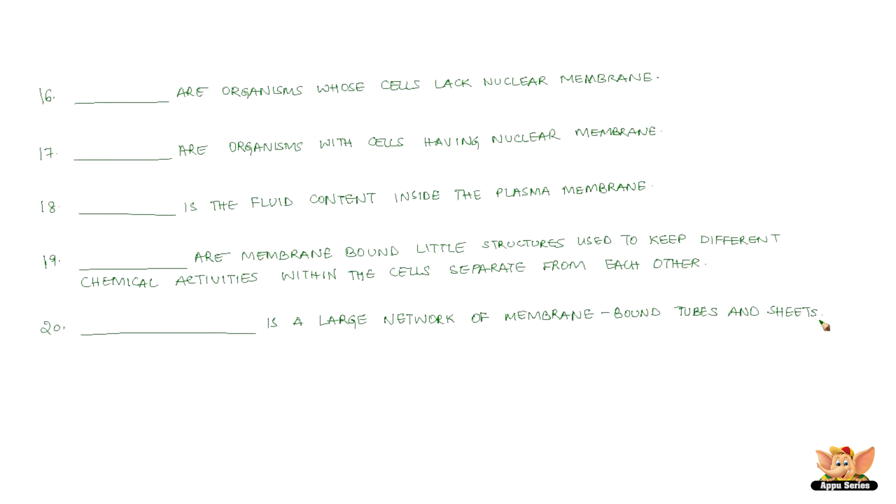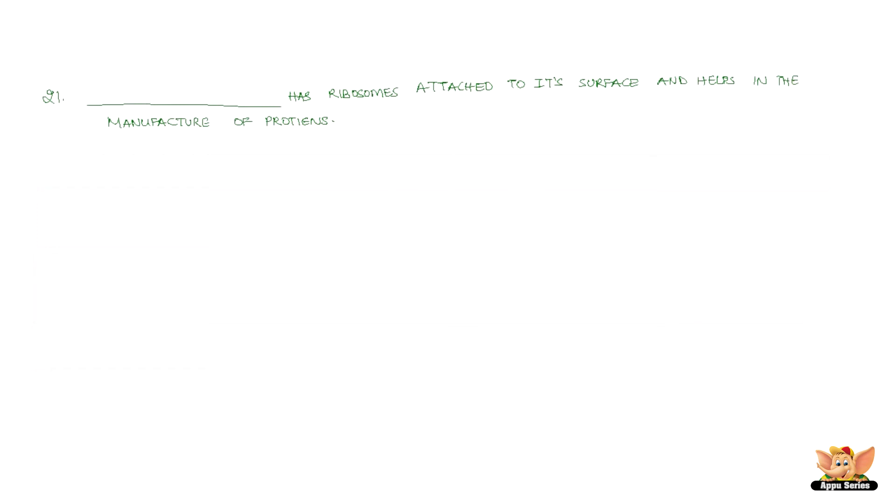Dash is a large network of membrane-bound tubes and sheets. Dash has ribosomes attached to its surface and helps in the manufacture of proteins. Dash helps in the manufacture of fat molecules and lipids.